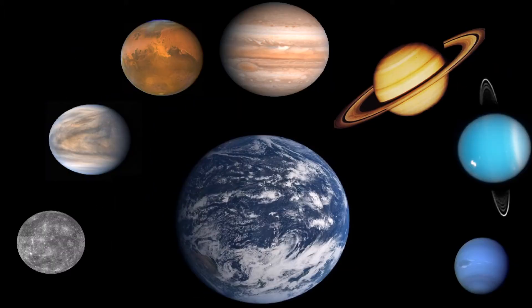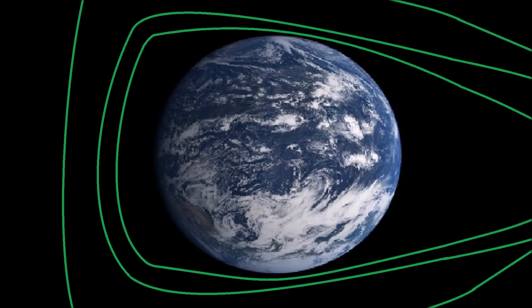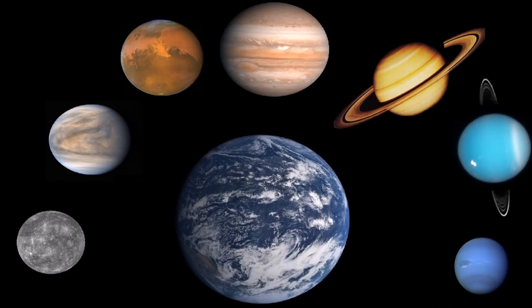We don't really know what the other planets are made of deep inside because we can't get seismography equipment there. However, these other planets likely don't have a large iron core because they don't have a strong magnetic field the way Earth does. So Earth may not be the biggest planet, but it is the densest, at least in this solar system.